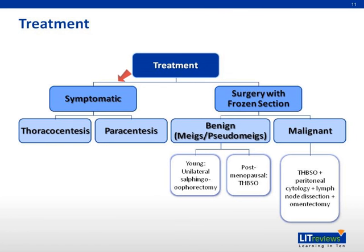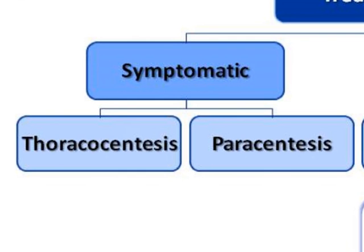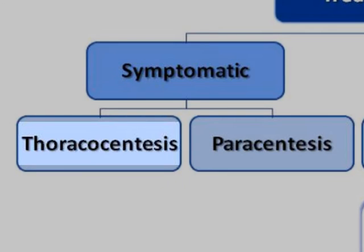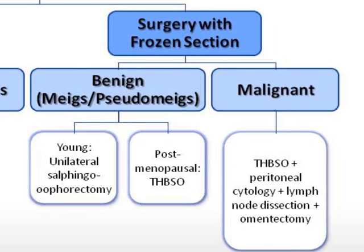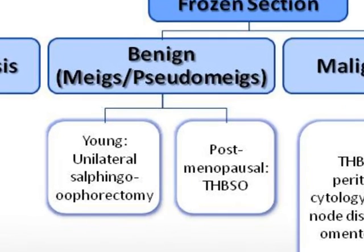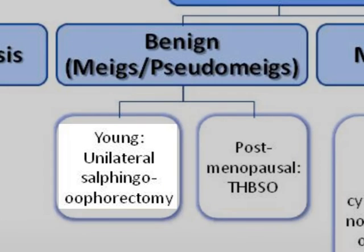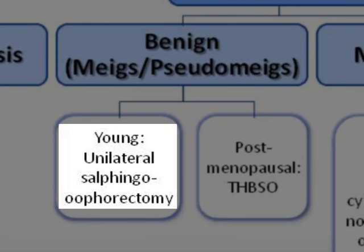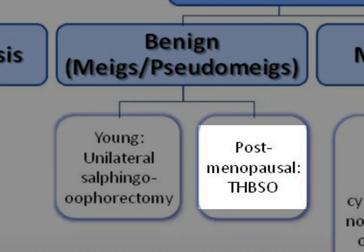Treatment includes symptomatic treatment and surgery with frozen section. Symptomatic relief of the pleural effusion and ascites is done via thoracocentesis and paracentesis. Surgery with frozen section is done to distinguish between benign and malignant ovarian tumors. If frozen section shows a benign tumor, unilateral salpingo-oophorectomy is done for young women, while a total hysterectomy with bilateral salpingo-oophorectomy is done for women who have completed their families.